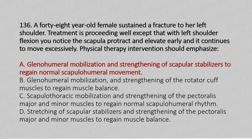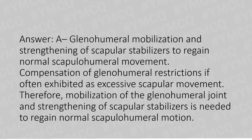The answer is Option A — glenohumeral mobilization and strengthening of the scapula stabilizers to regain normal scapulohumeral movement. Compensation for glenohumeral restriction is often exhibited as excessive scapular movement. Therefore, mobilization of the glenohumeral joint and strengthening of scapula stabilizers is needed to regain normal scapulohumeral motion.